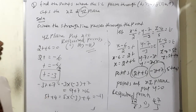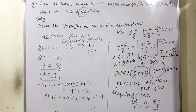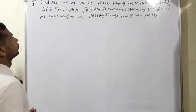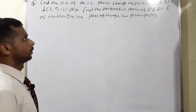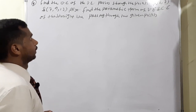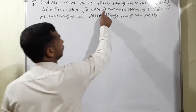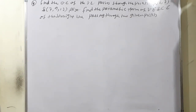Now, one of the important questions: question number 4. Find the direction cosines of the straight line passing through two given points. Then find the parametric form of vector equation and the Cartesian equation.